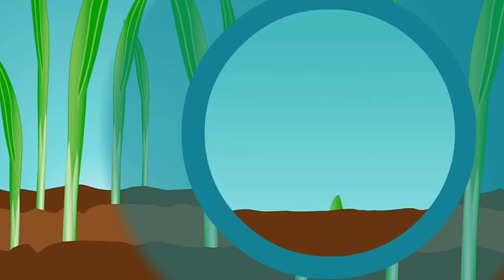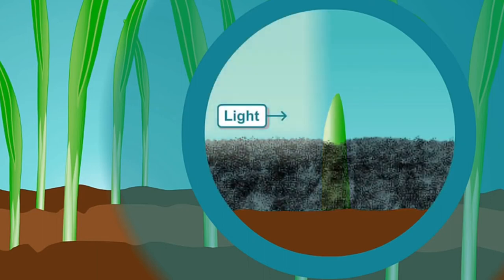When light was shone on the tip but the lower regions were covered, the coleoptile did bend. This showed that only the tip needs to be stimulated.